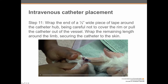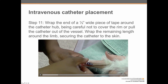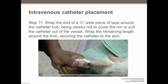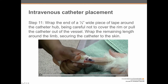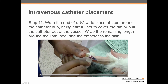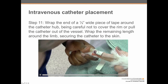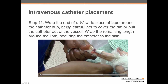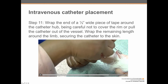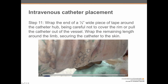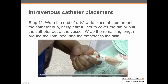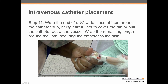Step 11: it's time to start securing the catheter. Wrap the end of one of the narrow half-inch pieces of tape around the catheter hub, sticky side up, being careful not to cover the rim and not to pull the catheter out of the vessel. She dries off any blood on the fur and continues wrapping the tape all the way around, then securing it onto itself to secure the catheter to the skin.